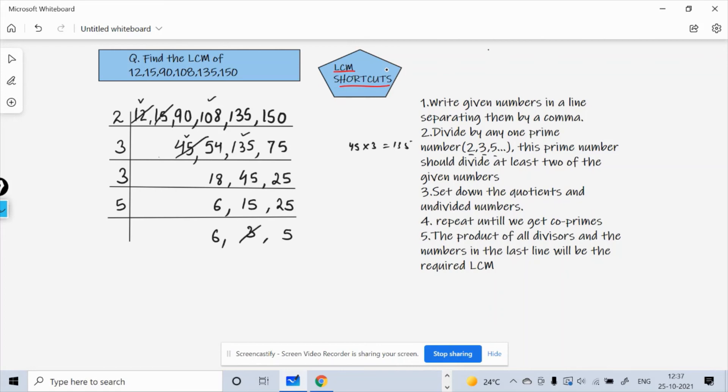After this I can see 6 and 5, they are co-primes, so we can stop over here. Just don't need to go any further. So what will be the LCM? LCM will be the product of all the divisors from here, which are 2 into 3 into 3 into 5, the numbers which are left and which are the co-primes, that is into 6 and into 5. And you multiply, the product of all these numbers is 2700.